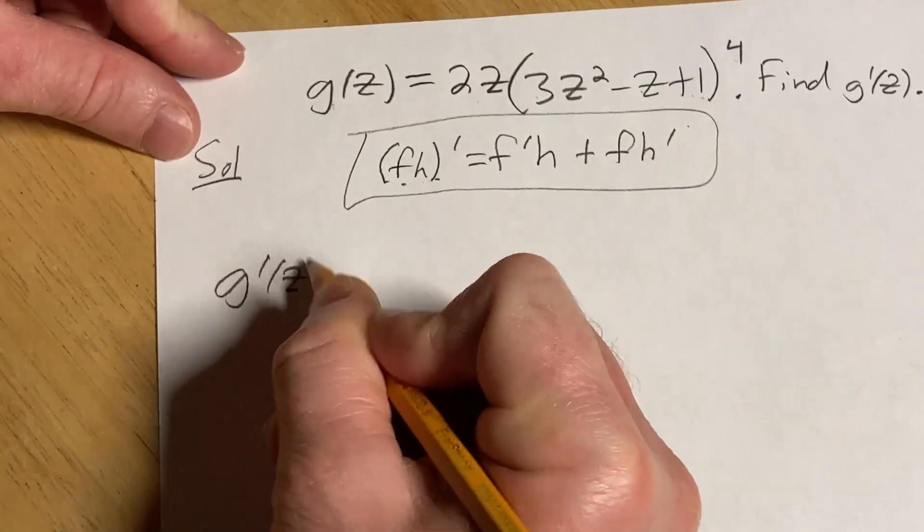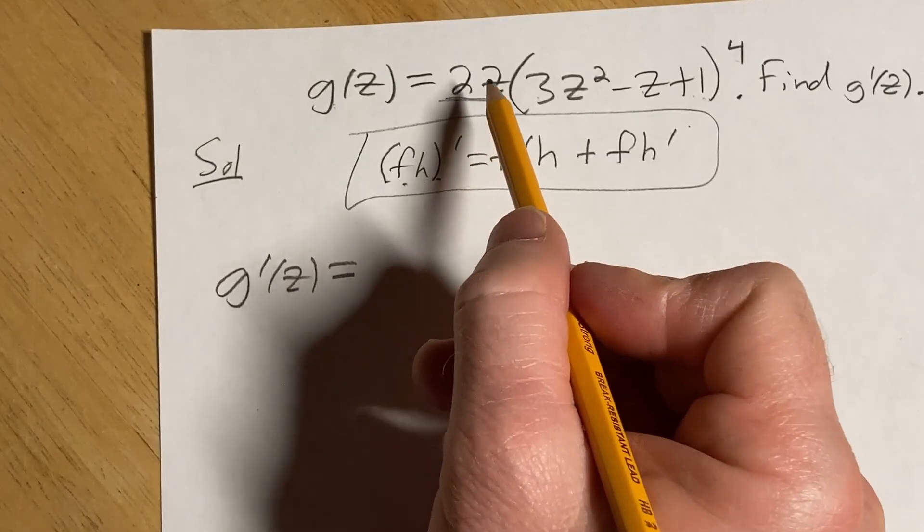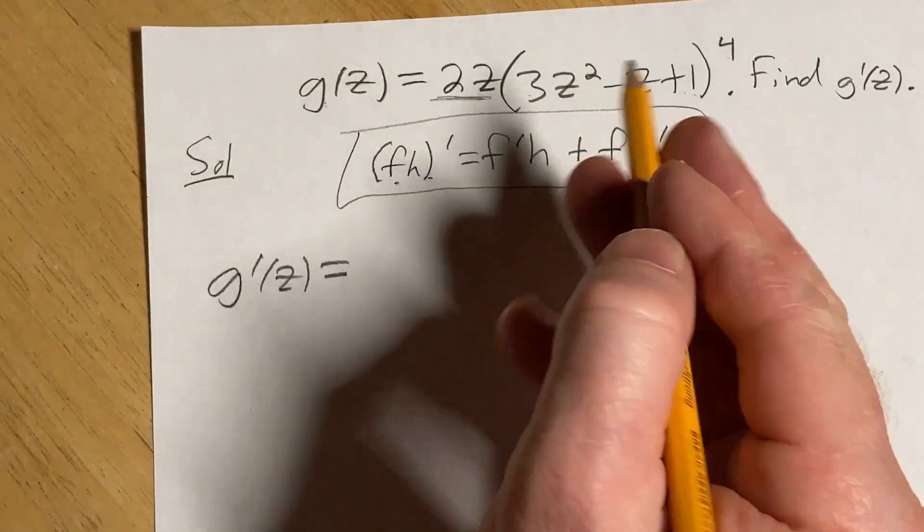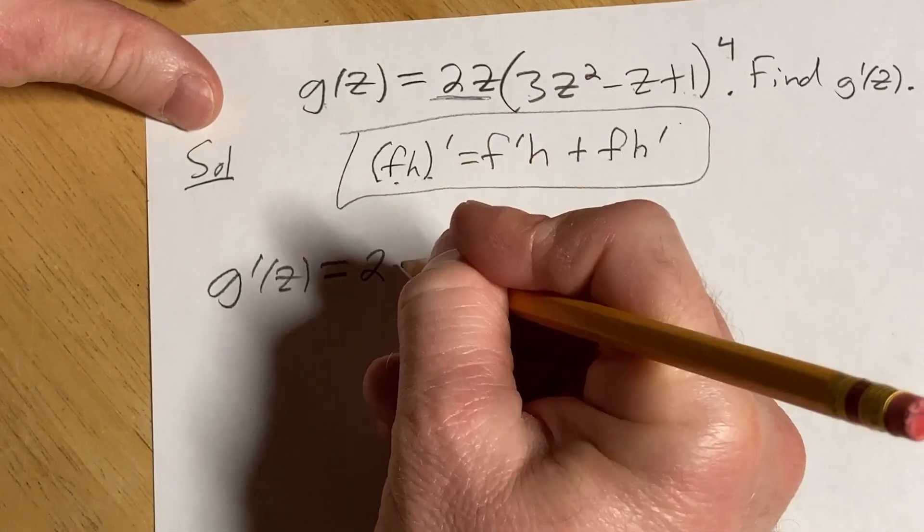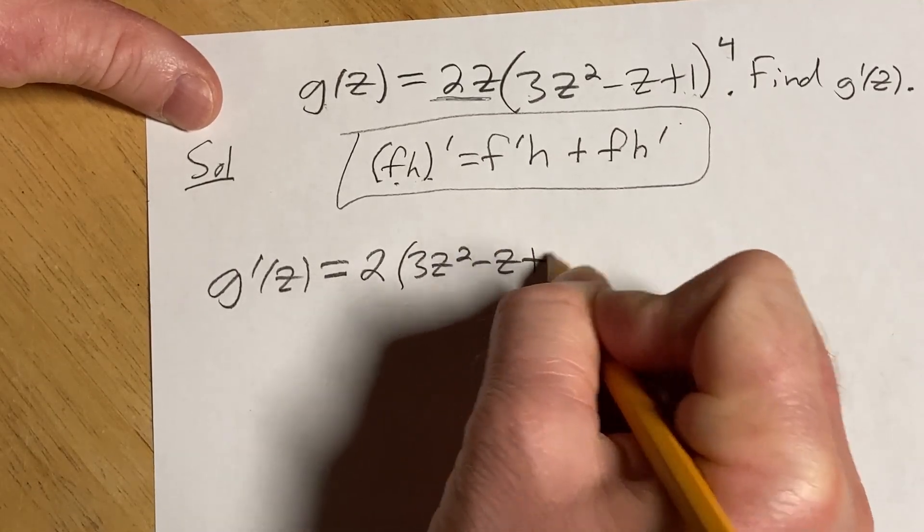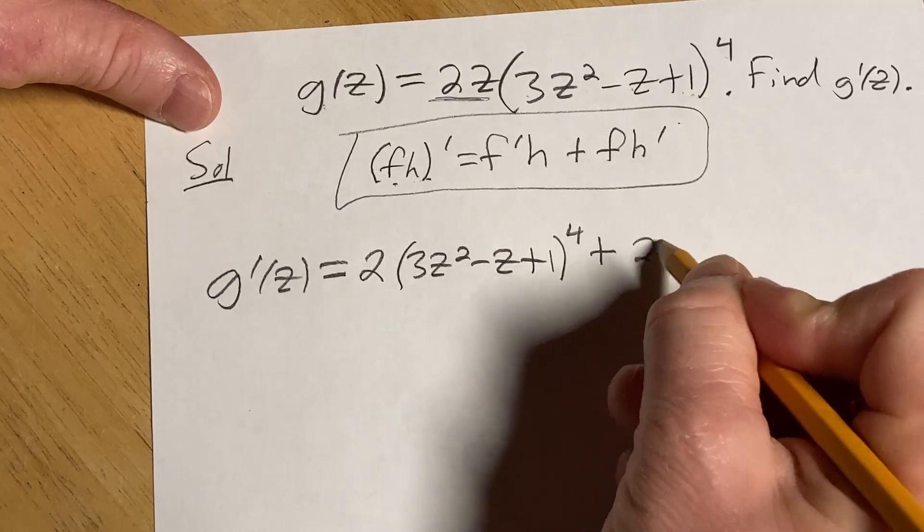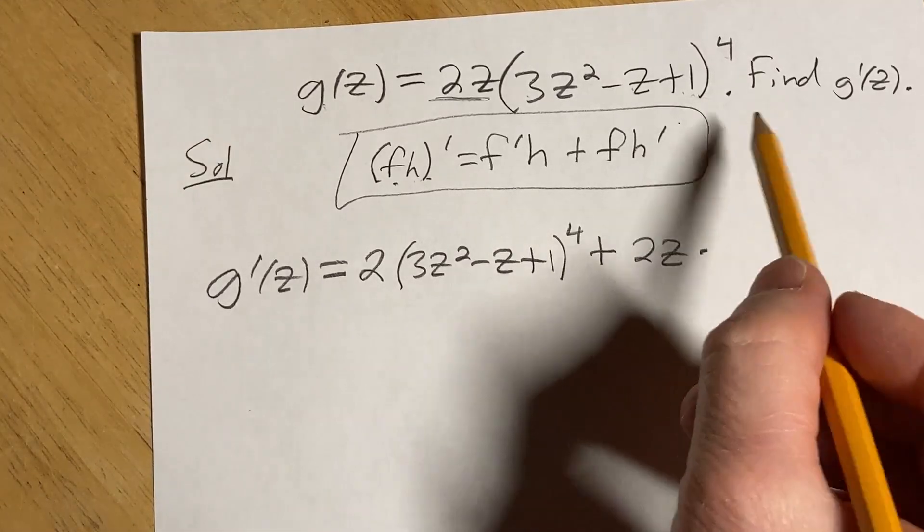So g prime of z, the derivative of the first is going to be the derivative of 2z. Well, the derivative of 2z is just 2 times the second. That's our h plus the first, which is just 2z, times the derivative of the second.